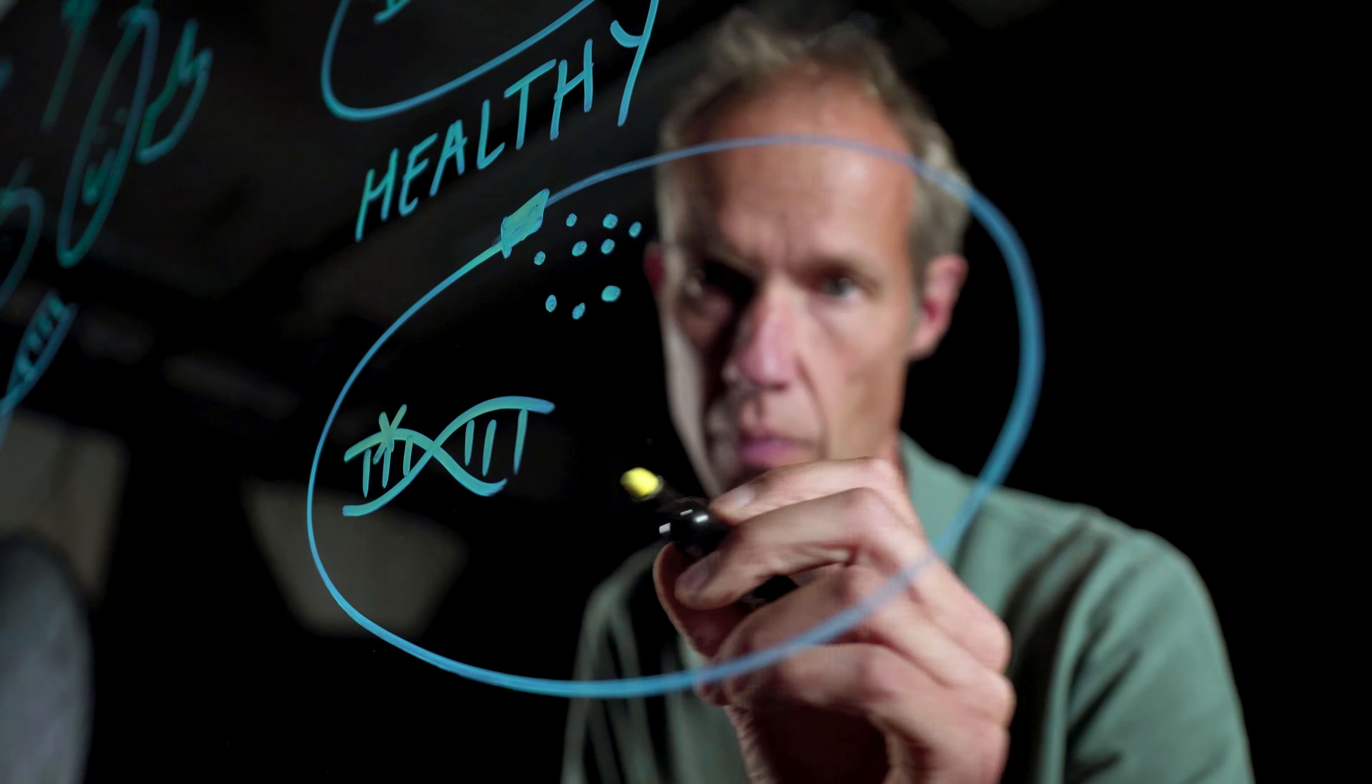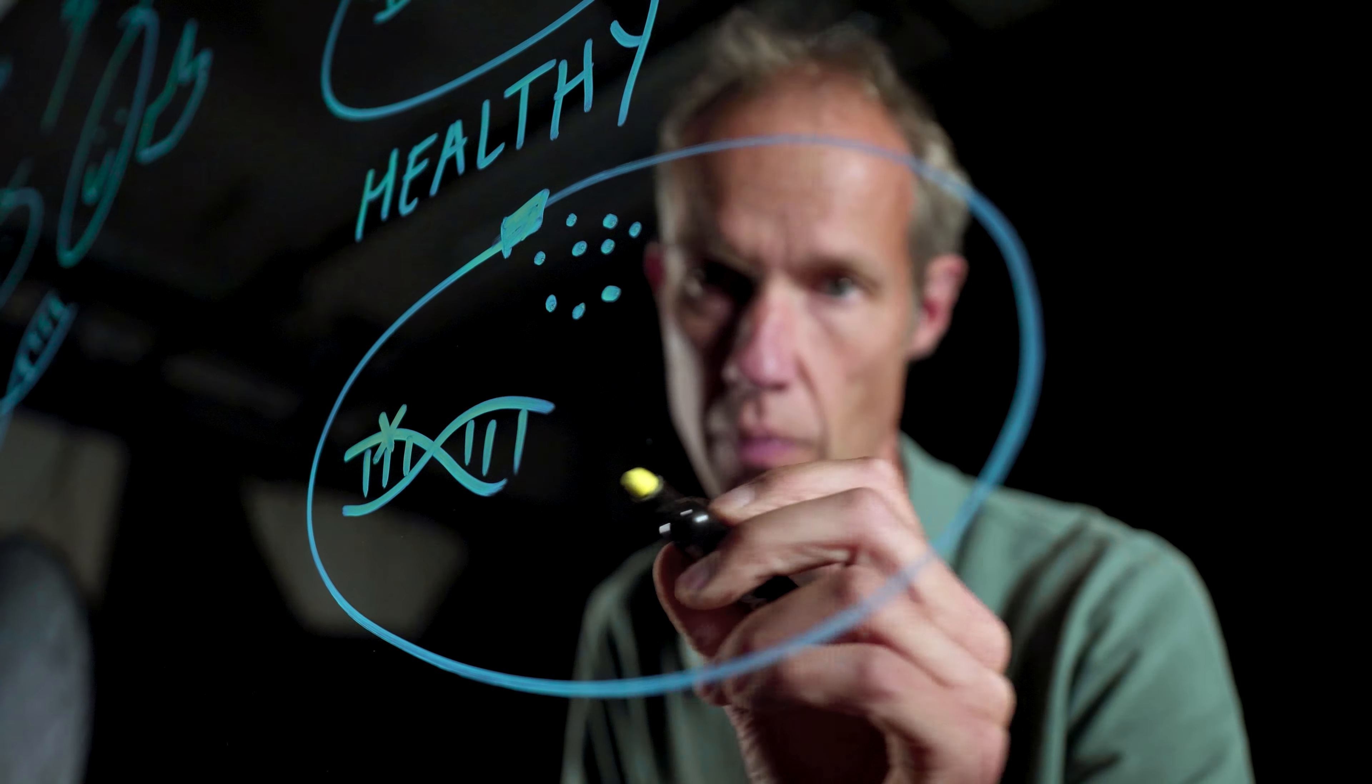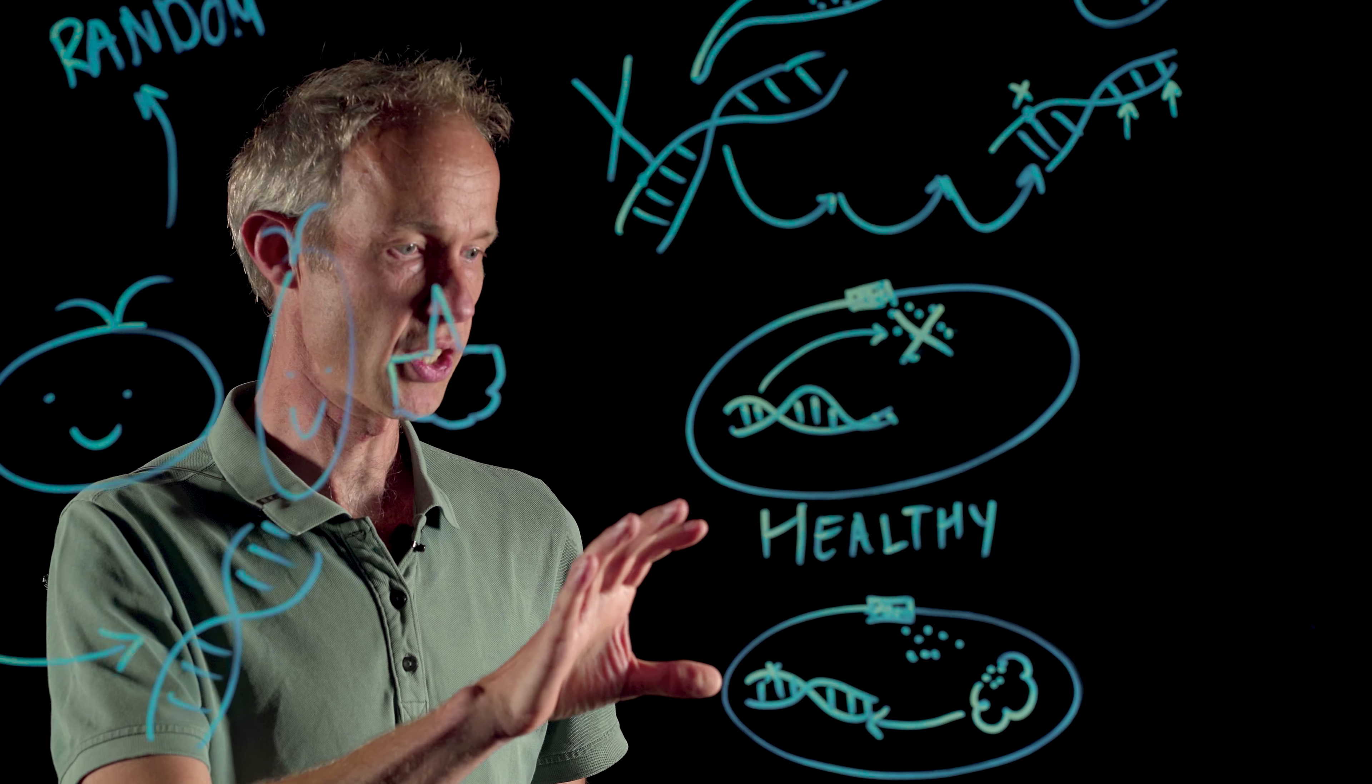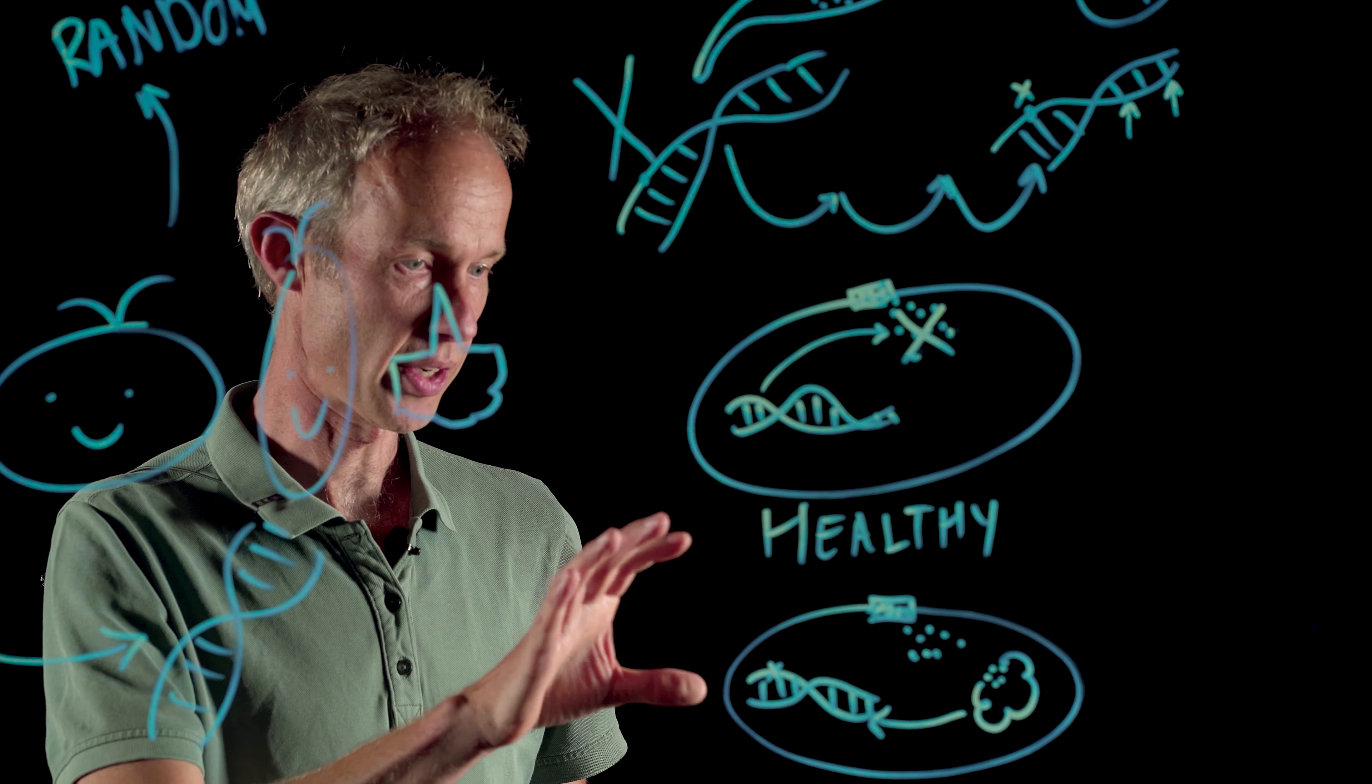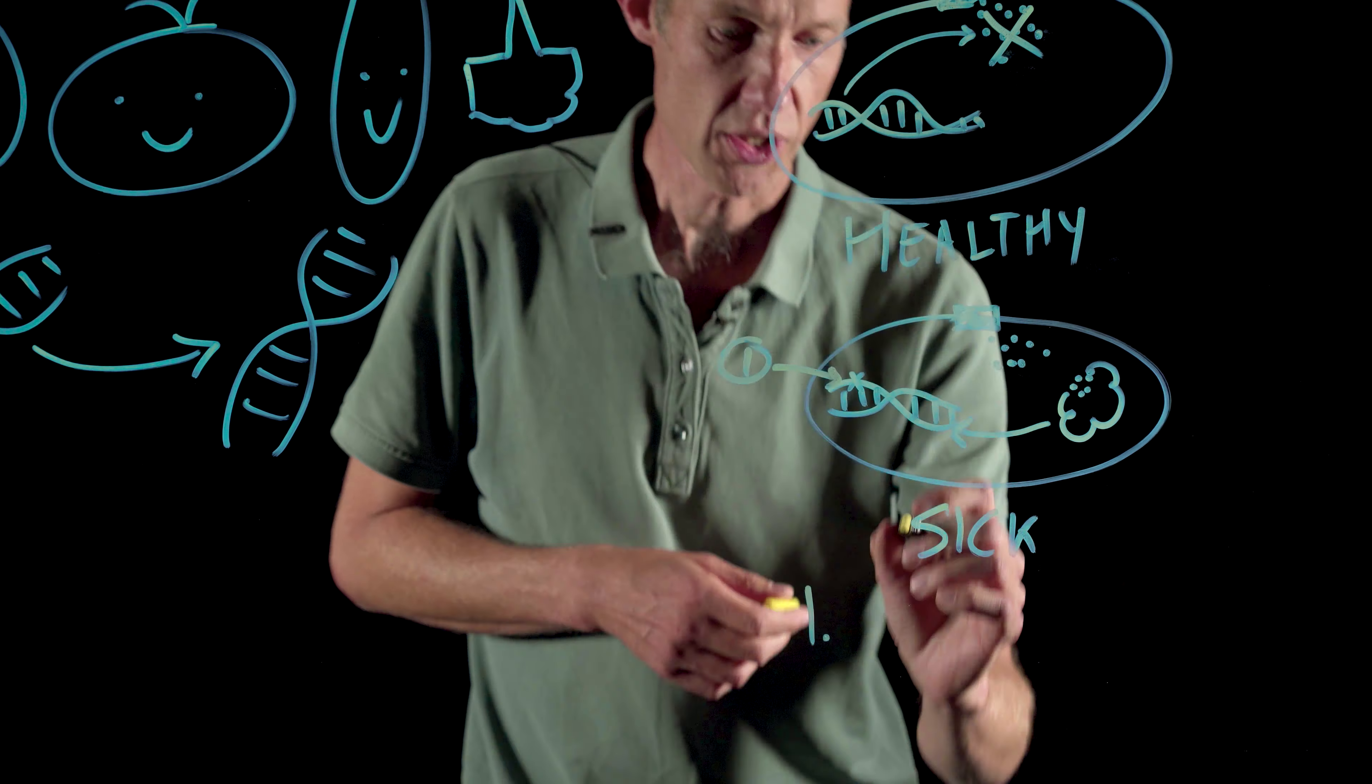However, we have a mutant in which this system doesn't work. So the protein is present, it produces this substance, but the gene that is supposed to fix the problem is broken. So that means that the substance is not removed and stays in the cell. What happens then is that it binds to a different protein which then binds to DNA and causes many problems.